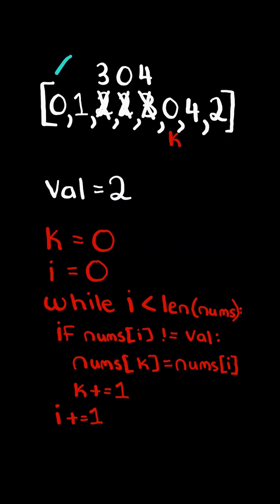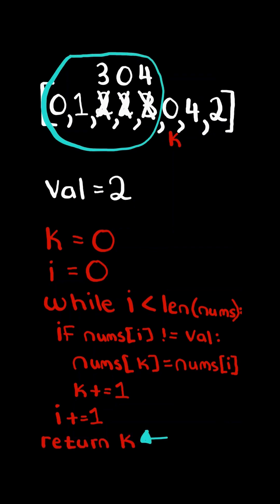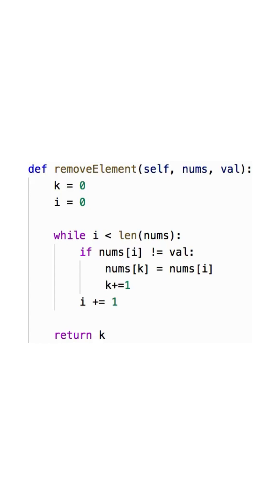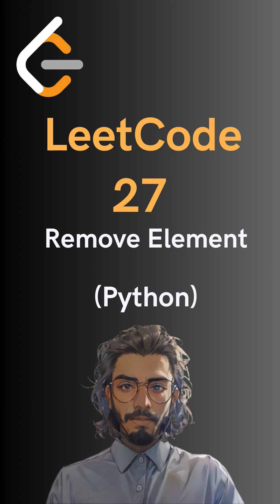At the end, the array will have the k numbers not equal to value at the start. And so at the end, we return k. And here's the code to do so. Please like and follow for more.